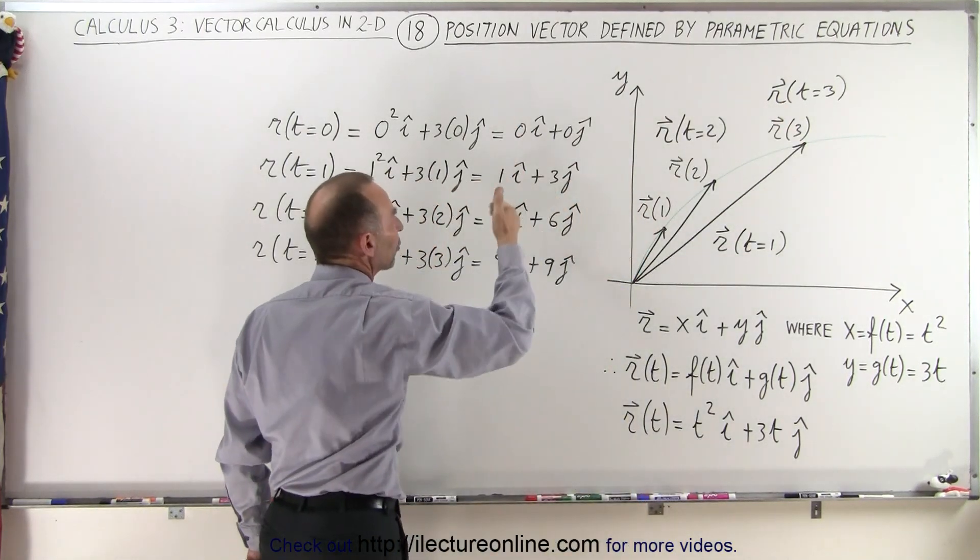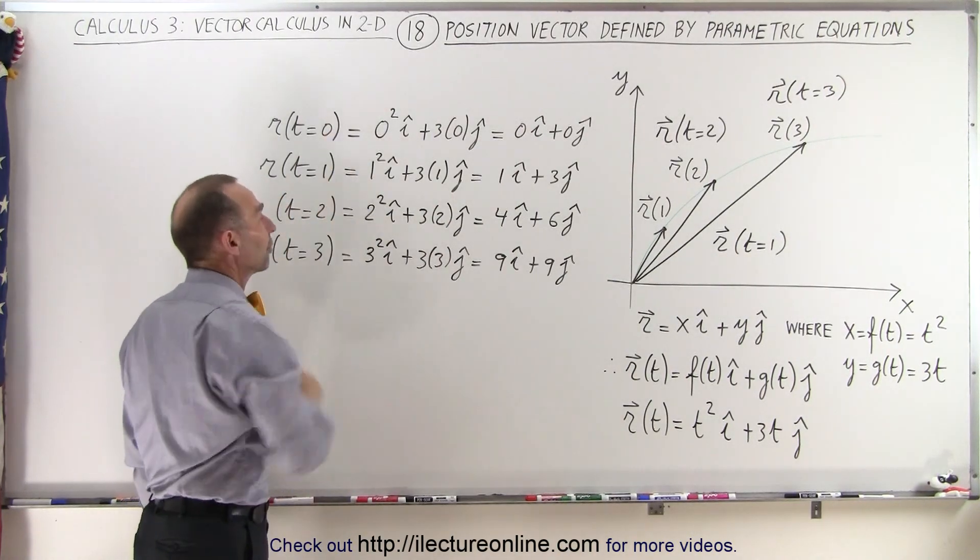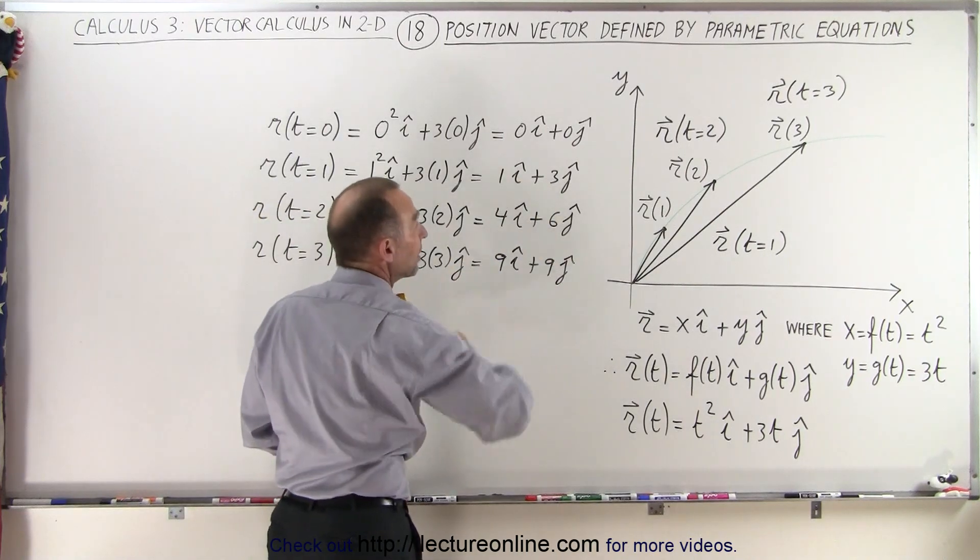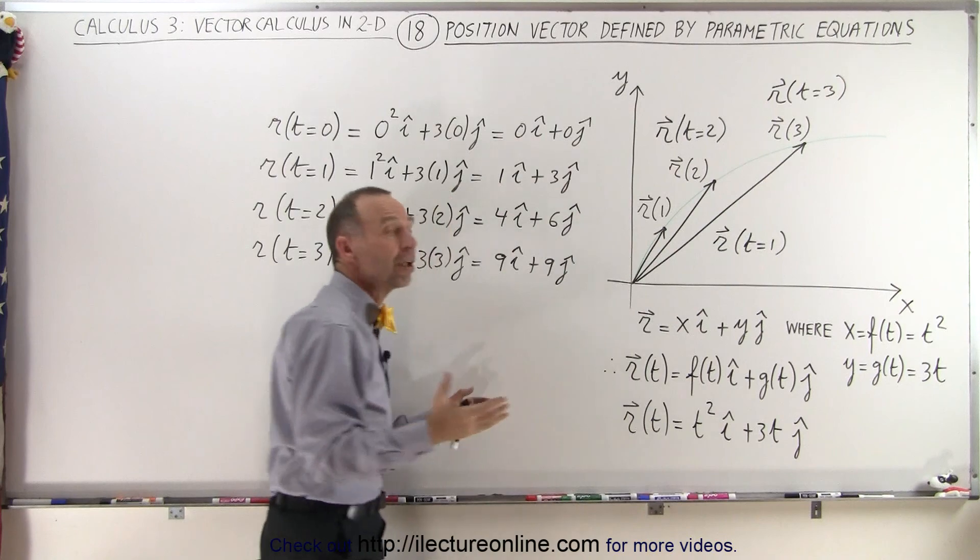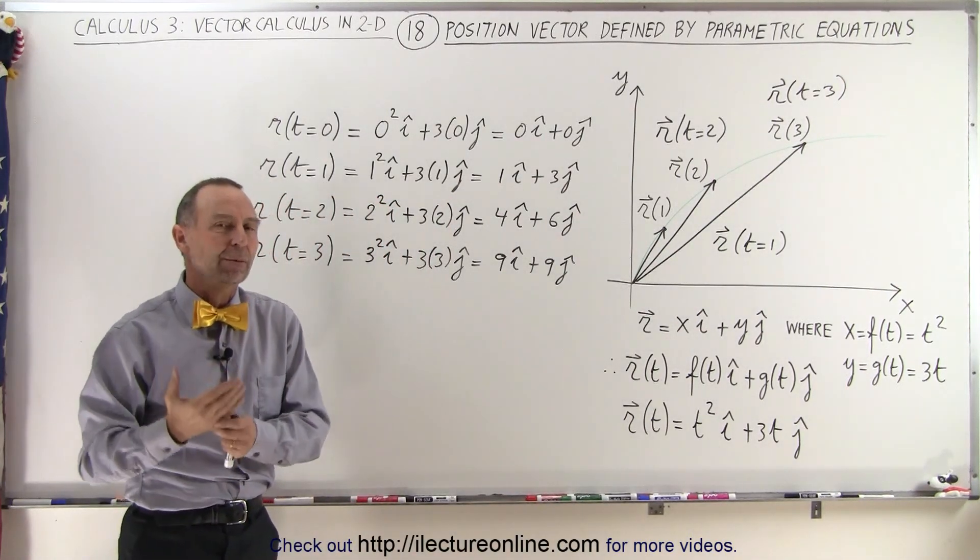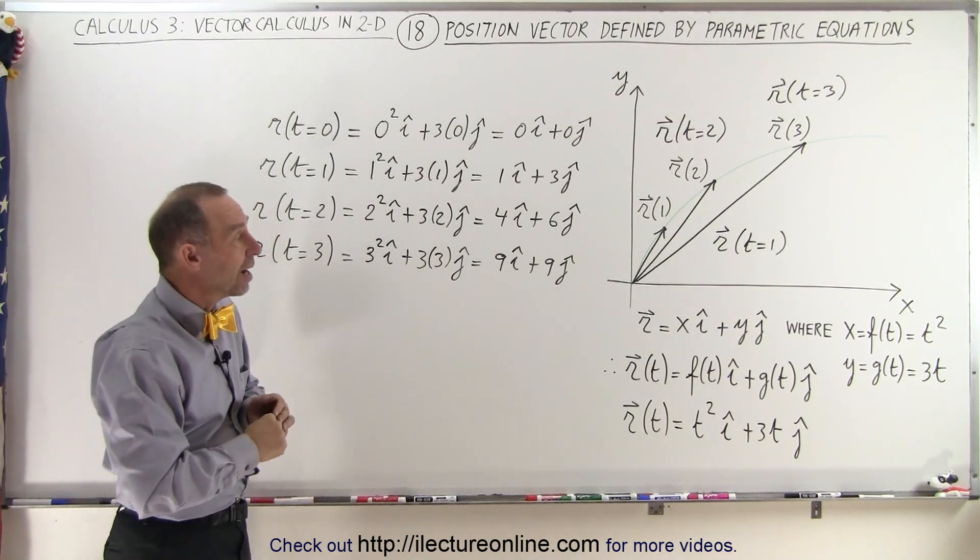So here are the position vectors evaluated for various values of the parametric variable. Of course, the result is a vector quantity, which then shows the position of the object you're following, the particle you're following, for those various values for the parametric variable. In this case, we can assume that that represents time.